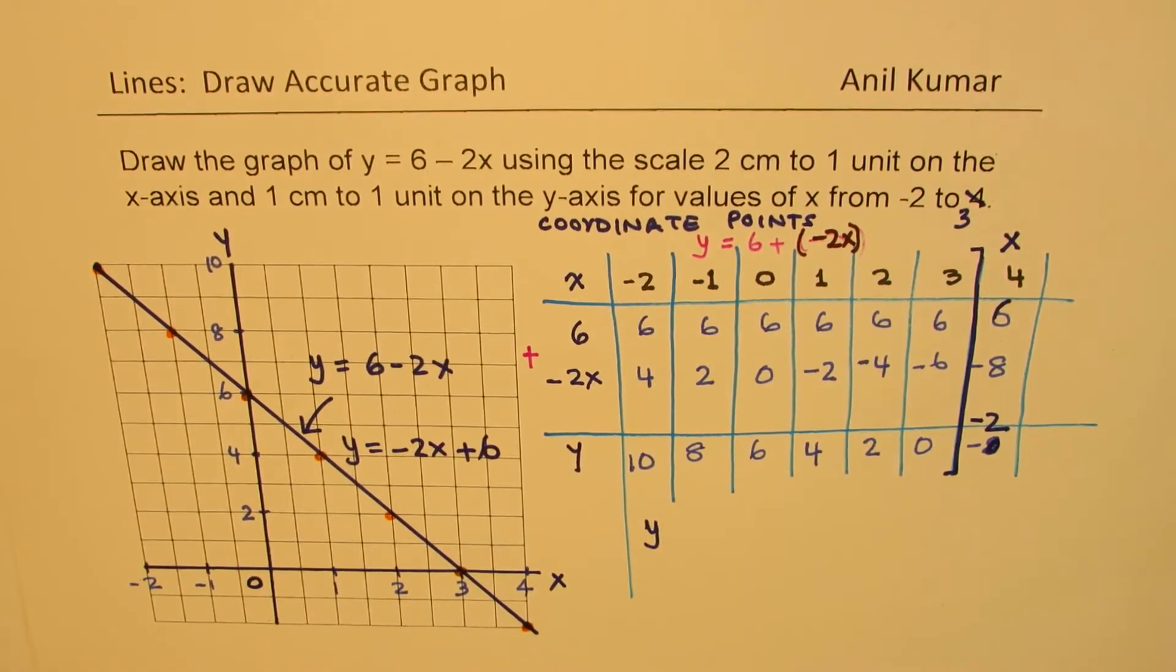So normally, we write this as y equals to minus 2x plus 6 slope and intercept form. But either way, it is one and the same thing. So I hope you understand and appreciate how do we get the coordinate points and connecting them, we can get our line as shown here.